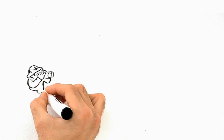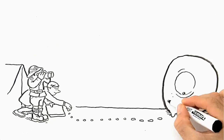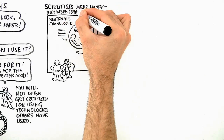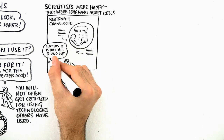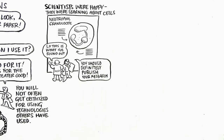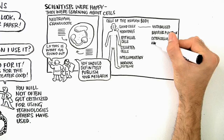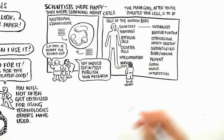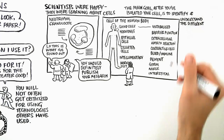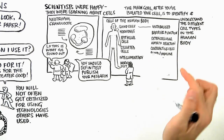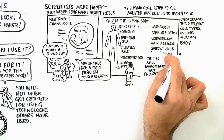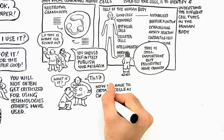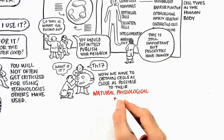For a number of years, cell isolation on the nano-planet has been humming along. Scientists were happy, they were learning about cells, there was easy acceptance to publish. And until recently, this was alright. The main goal after you've isolated your cells is to identify and understand the different types in the human body. This is still important, but priorities have changed. Now, we want to obtain cells as close as possible to their natural, physiological state.